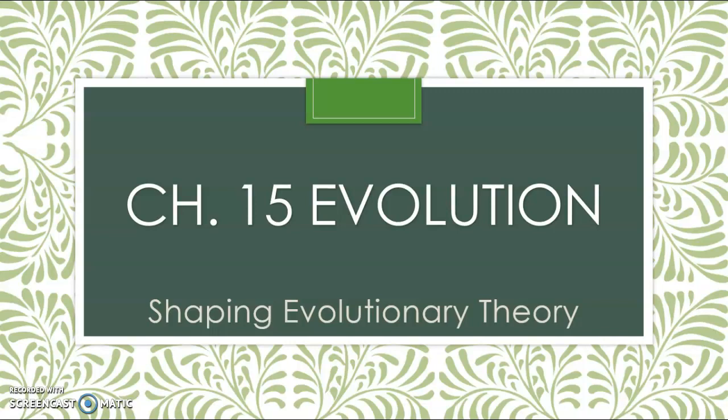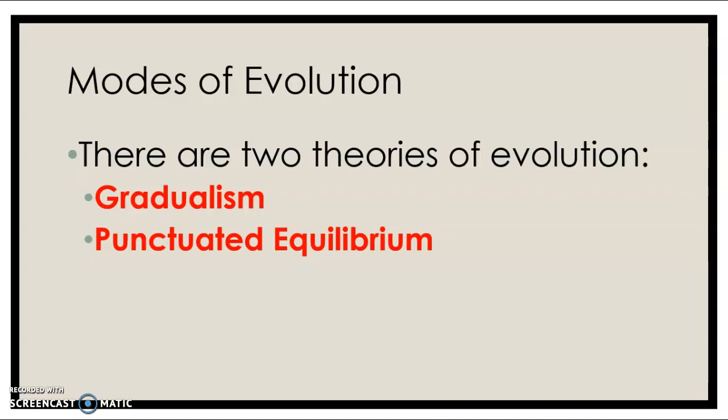Today we're going to wrap up our lectures on evolution, discussing some of the mechanisms of evolution. We're going to talk about two ways that evolution can take place, or two modes that can lead to evolution. The first is called gradualism, and the second one is called punctuated equilibrium.